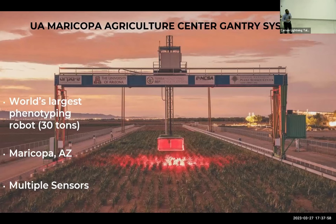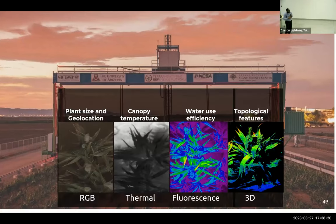One of the things that enables my research is this big robot called the Gantry system. Think of the Gantry system as a big robot equipped with different cameras that helps us study each and every plant — thousands of plants that we have in the field. The Gantry system helps us get data such as plant size, the temperature of the plant, the water use efficiency, and also the overall topological features of the plants.